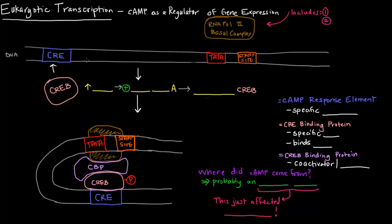So we imagine this DNA strand here with the TATA box and start site here at the promoter, and RNA polymerase 2's basal complex preparing to bind that promoter. To be clear, this basal complex includes RNA polymerase 2 and any basal transcription factors associated with it. For simplicity, I'm not going to draw all those transcription factors.